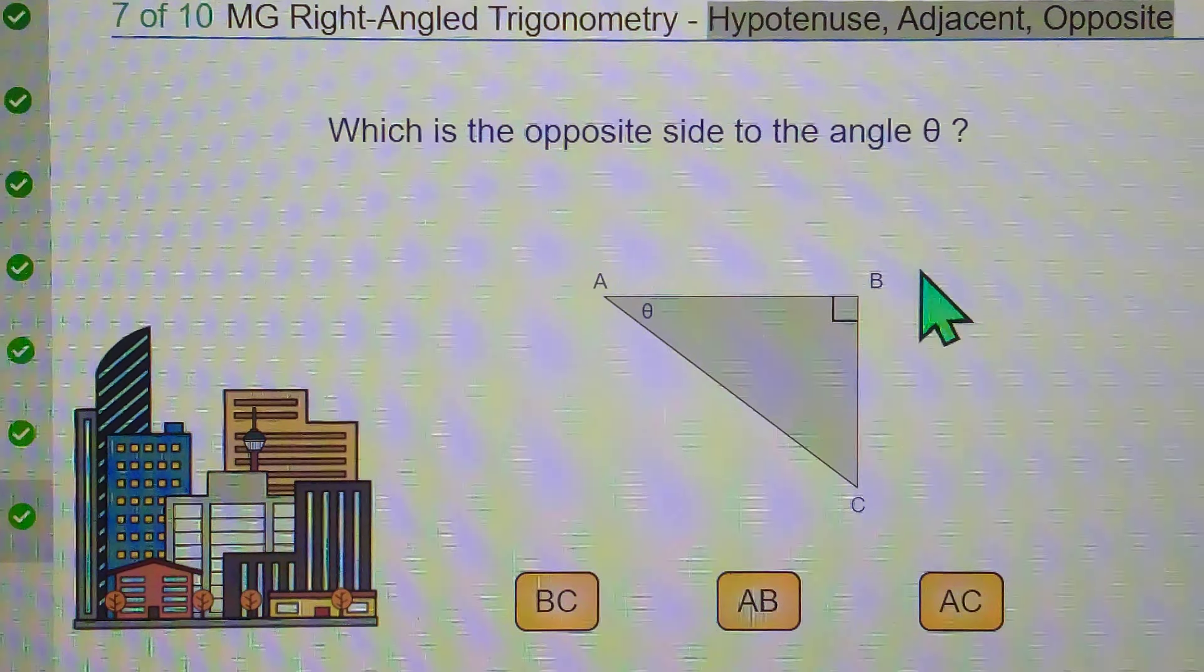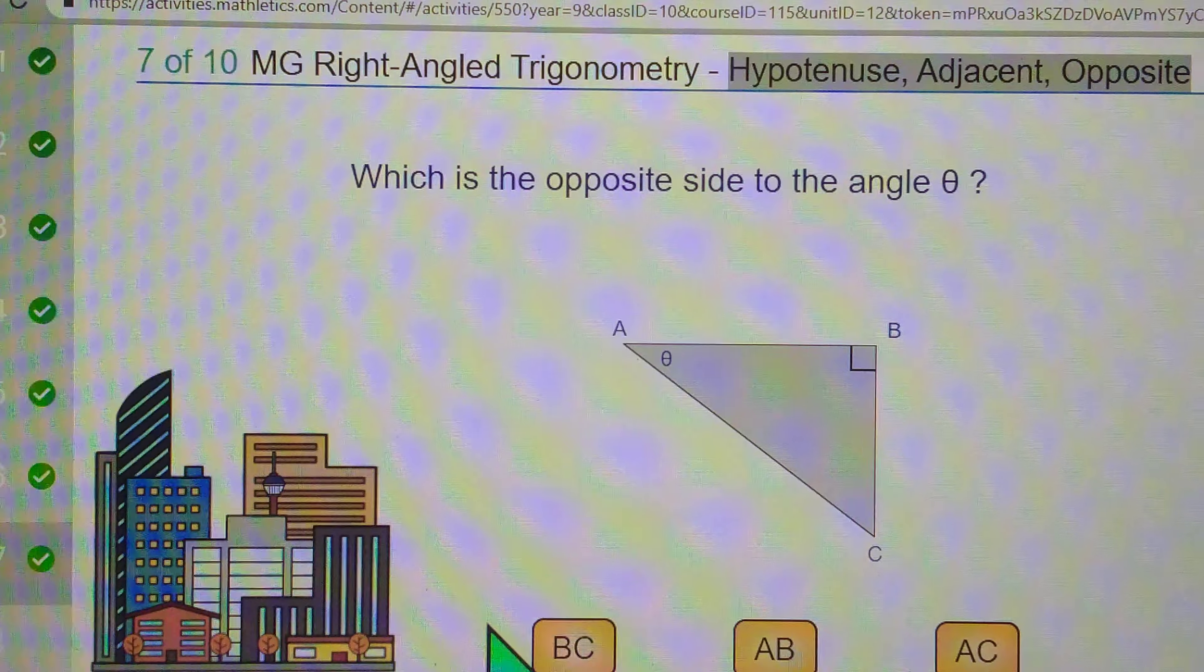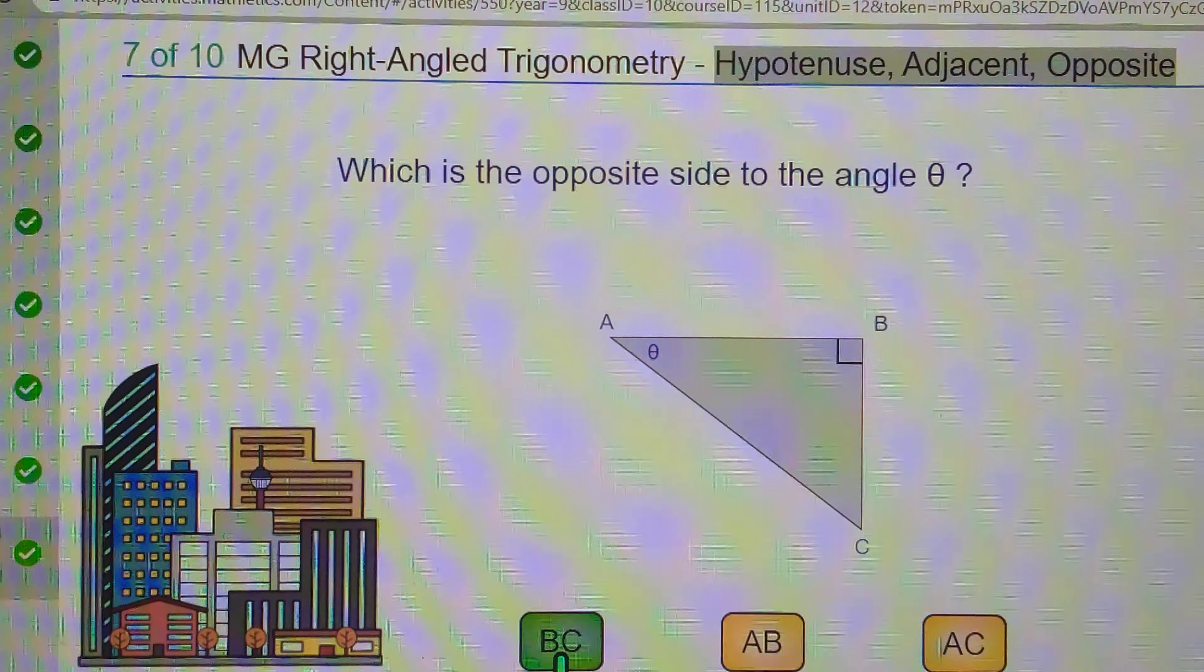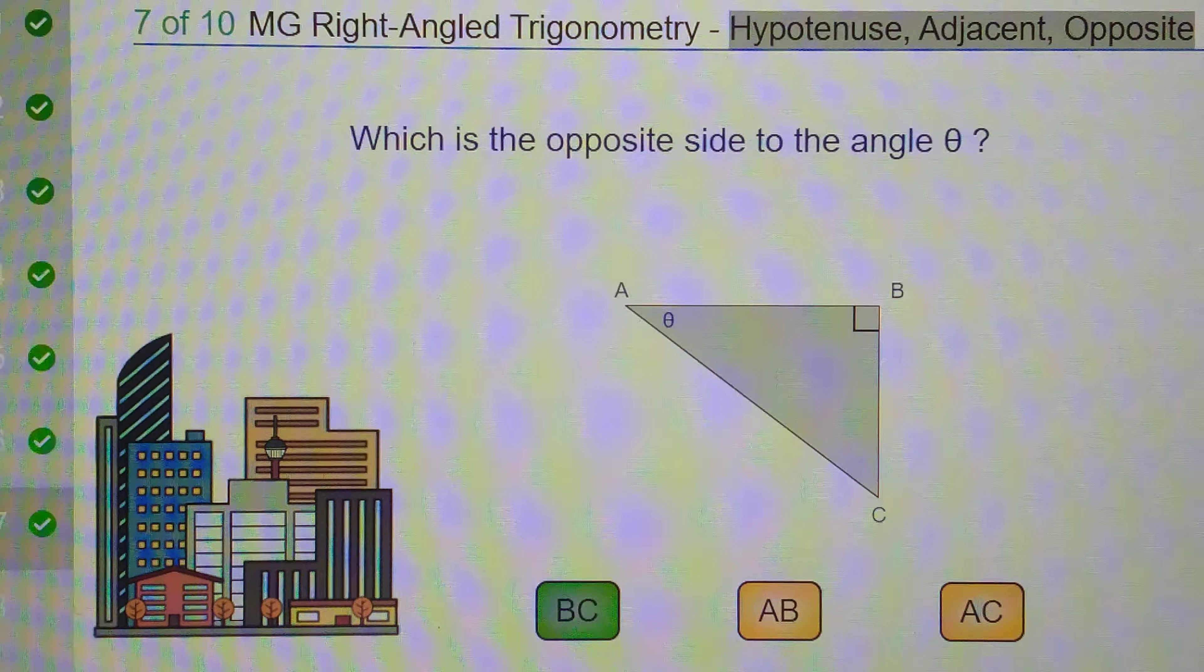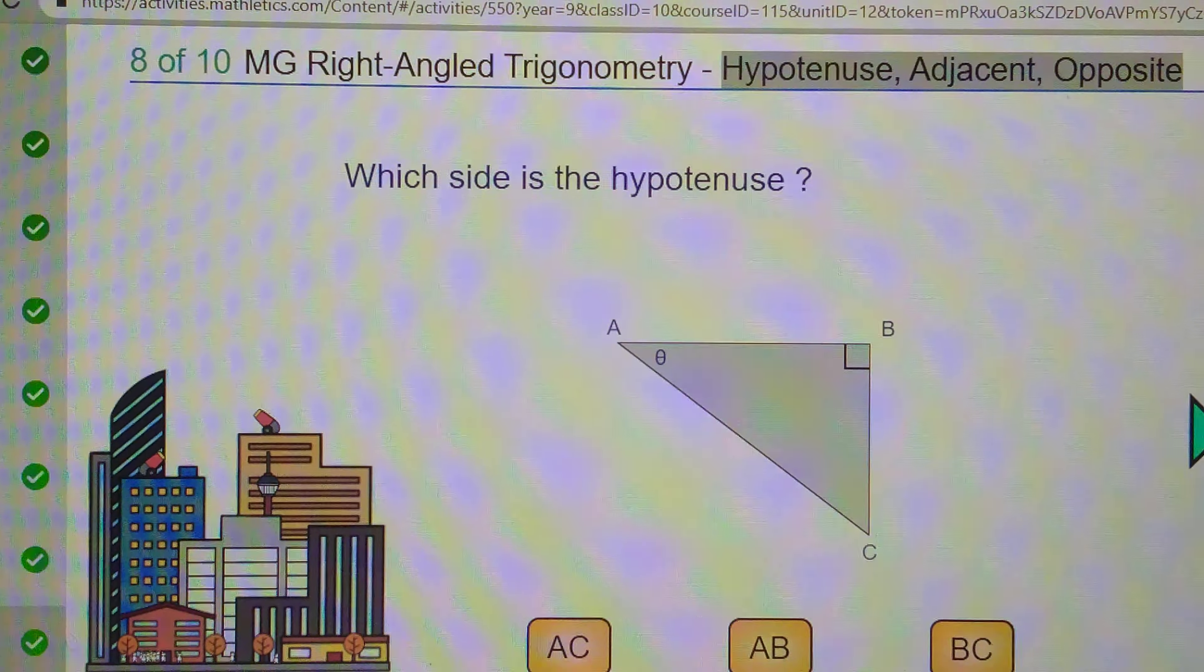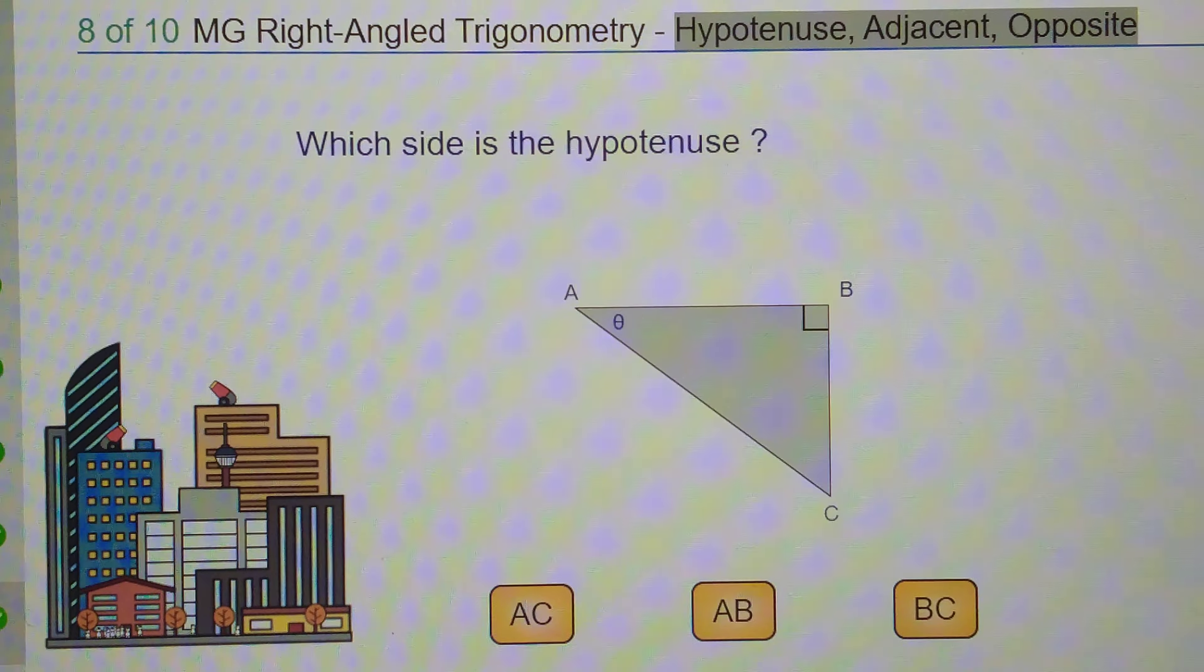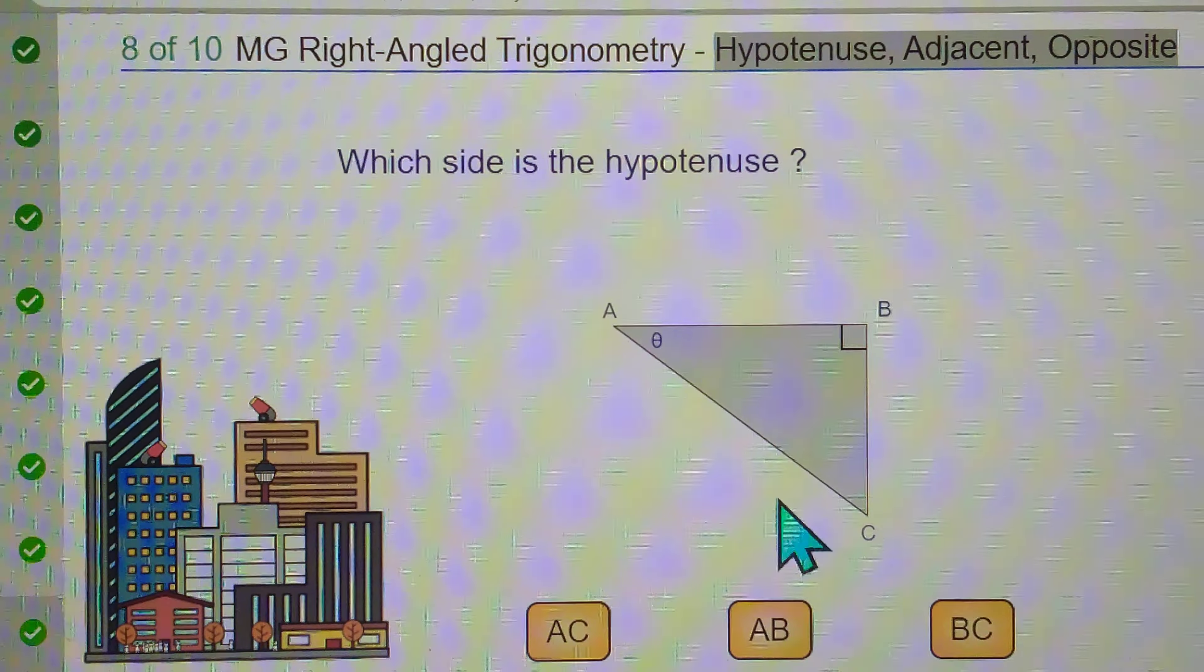Okay, which is the opposite side to the angle theta? The opposite side is BC, before Christ. Sure, sure. Yeah. I just don't know why. But why was Jesus born 5 BC or 4 BC before Jesus, when Jesus Christ was born? It was before AD. What?